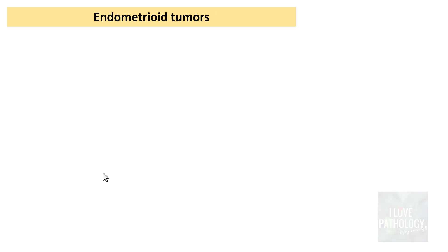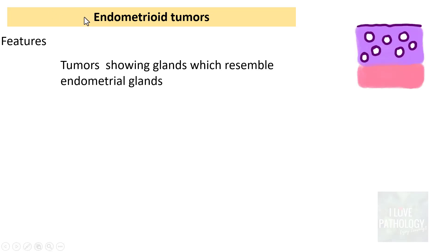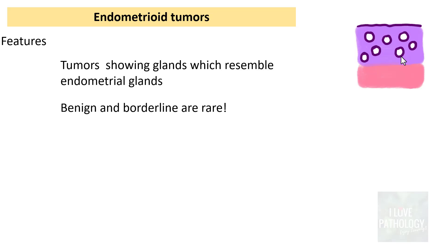After serous and mucinous tumors, the third important surface epithelial tumor is the endometrioid tumor. These are tumors which contain glands that resemble normal endometrial glands. The endometrioid tumors resemble endometrial glands — they are tumors containing endometrial-type glands.